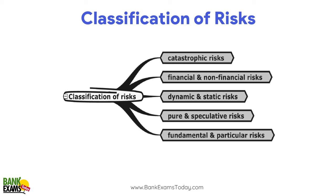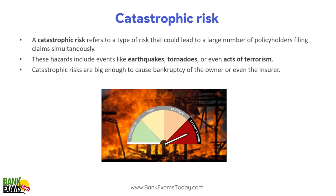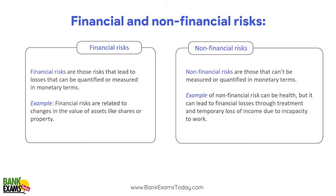Classification of risk. How many types of risk are there? Catastrophic, financial, non-financial, dynamic, static, pure, speculative, fundamental and particular. Catastrophic risk is at a very large level — a natural calamity, a big earthquake, forest fire, tornadoes, act of terrorism. In such situations, a lot of people will file for claims all at once. Insurance companies could go bankrupt because if a company has one lakh customers and 4–5 thousand people file claims at the same time, they obviously don't have that much money. So catastrophic risk is when a lot of people are affected at the same time.